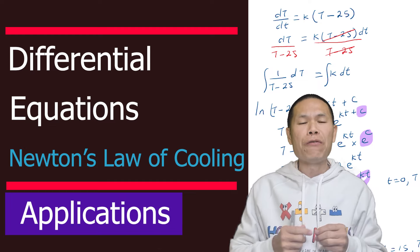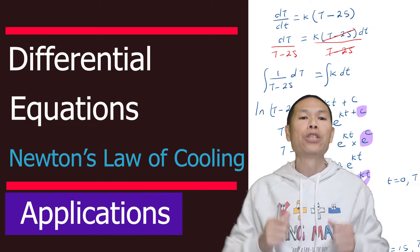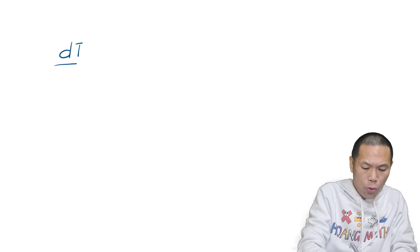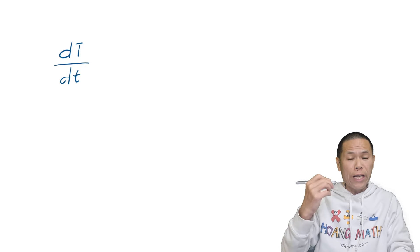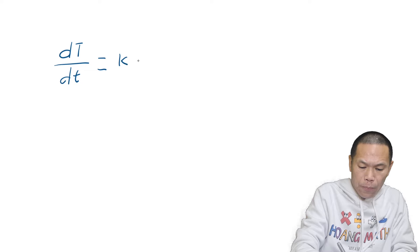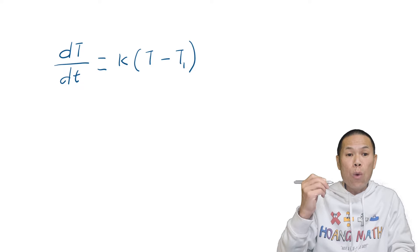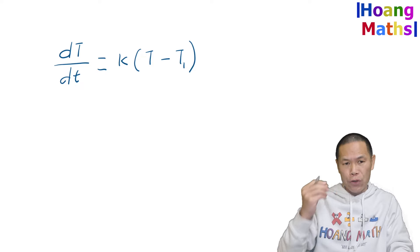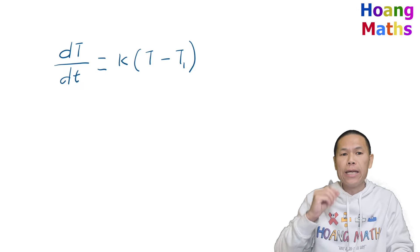There is a PDF version in the description below for you to download so you can work with me. First of all, we know that Newton's law of cooling is dT/dt — that is the rate of change of the temperature of an object — equals k times (T minus T1), where T1 is the room temperature, T is the temperature of the object, and k is the constant.